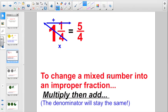So to change a mixed number into an improper fraction, just do the opposite. Multiply, then add. Start at the denominator. Multiply the denominator times the whole number. 4 times 1 is 4, and then go ahead and add the numerator. 4 plus 1 more is 5, and the denominator stays the same. 1 and 1 fourths equals 5 fourths.